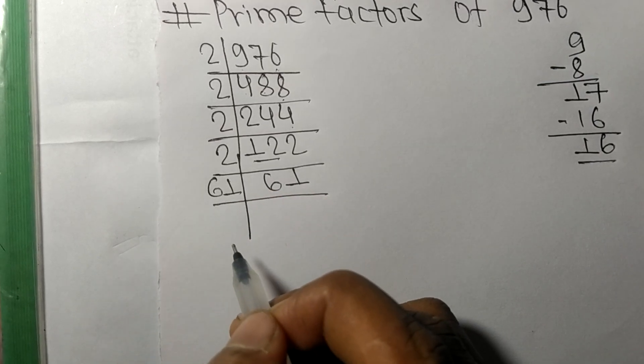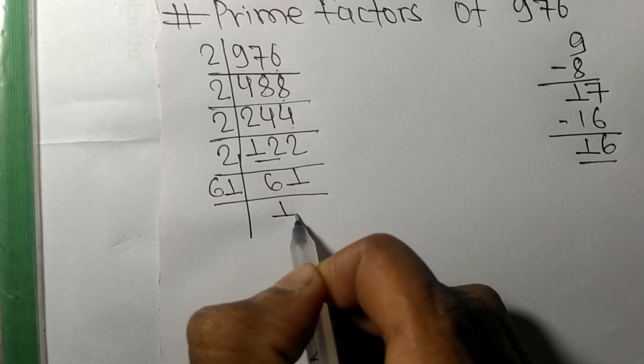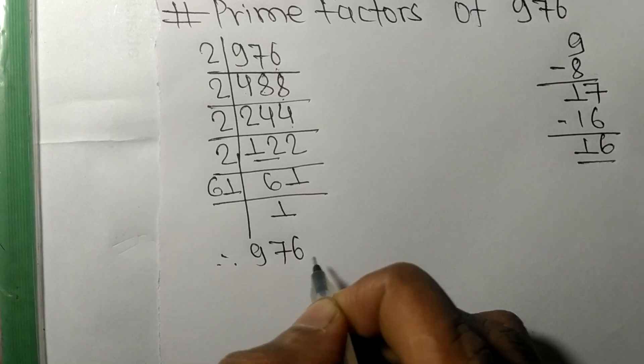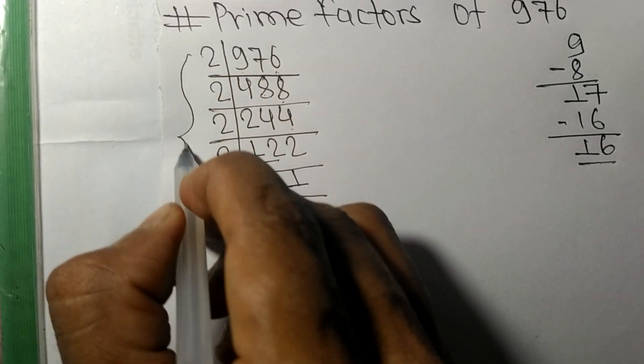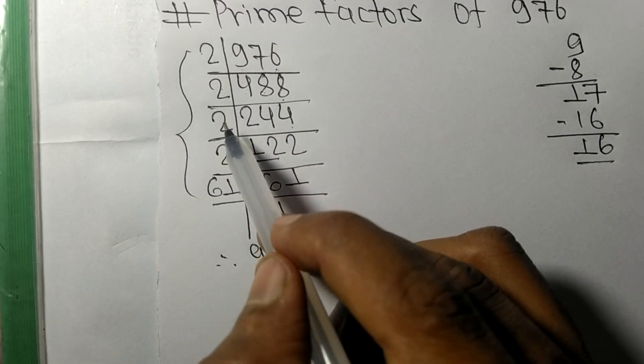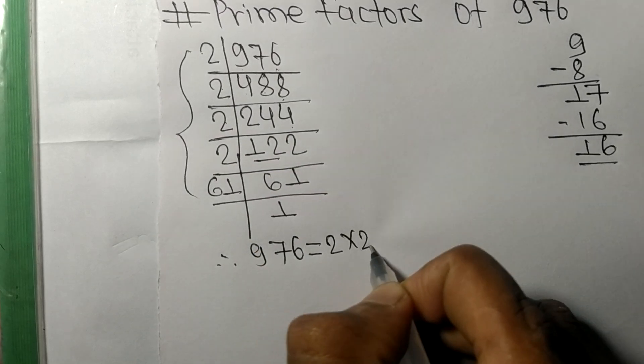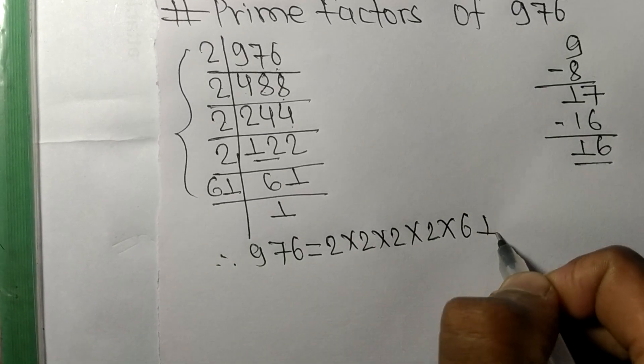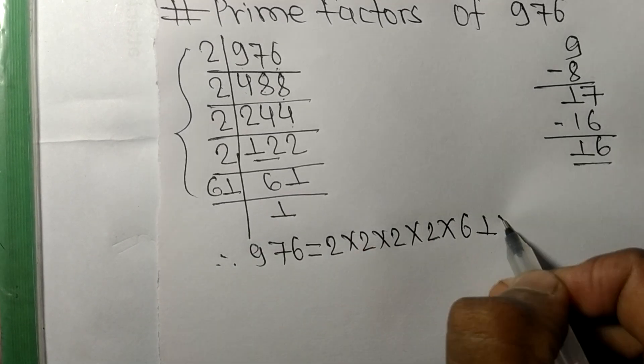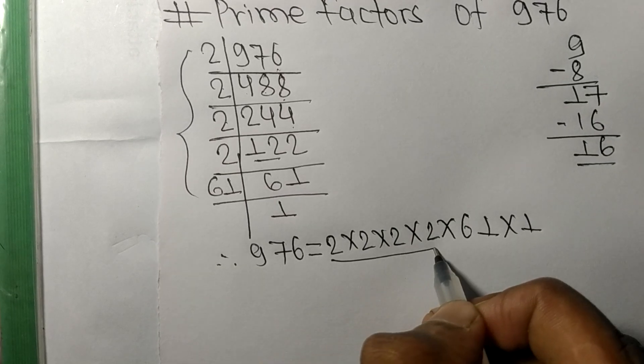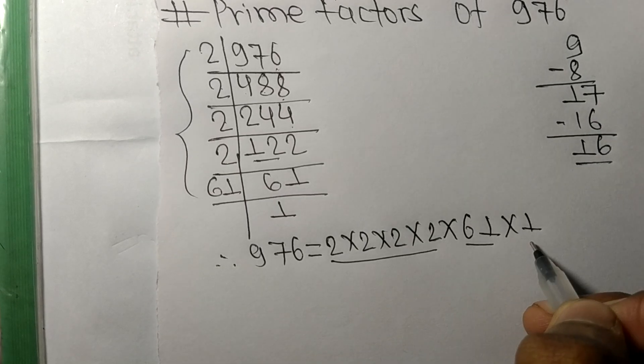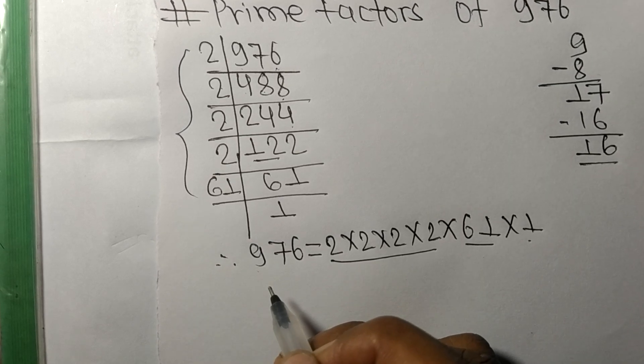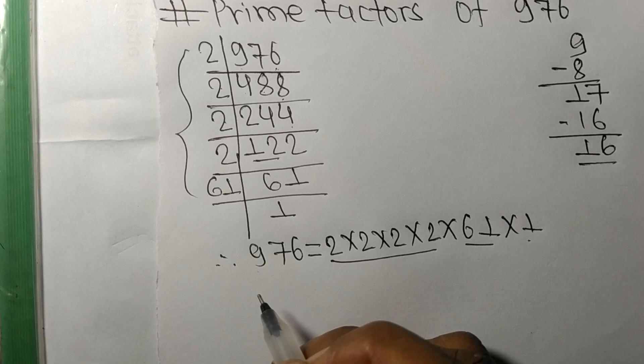Therefore, 976 is equal to, from this side it is 1, 2, 3, 4 times 2. So 1, 2, 3, 4 times 2, and this 61. From this side we get 1. So these 2, 61, and 1 are the prime factors of 976.